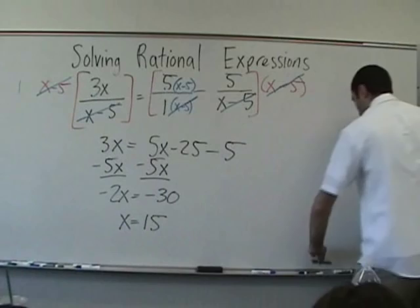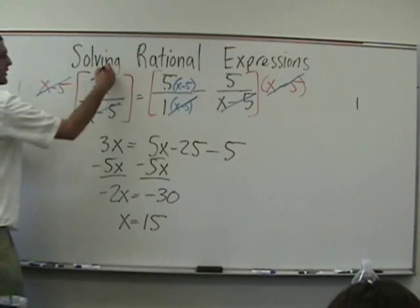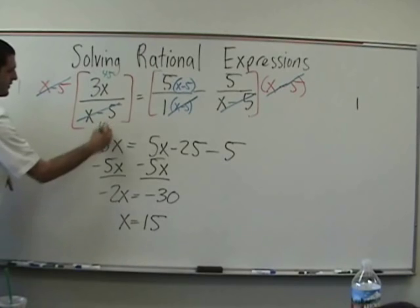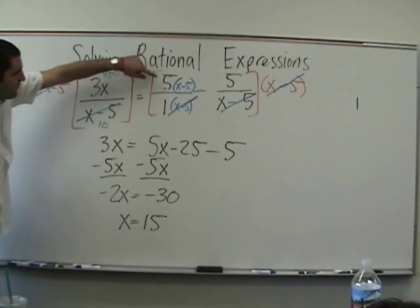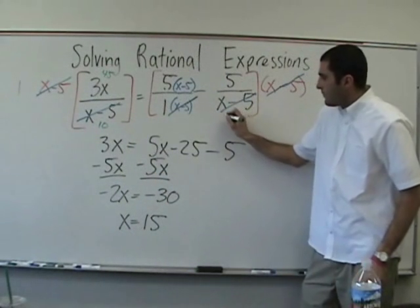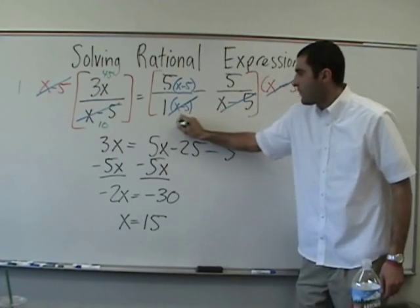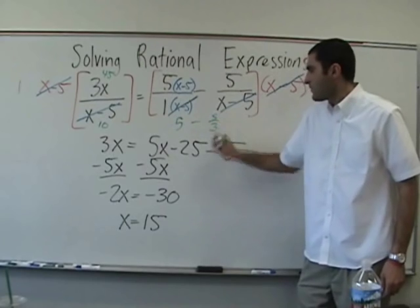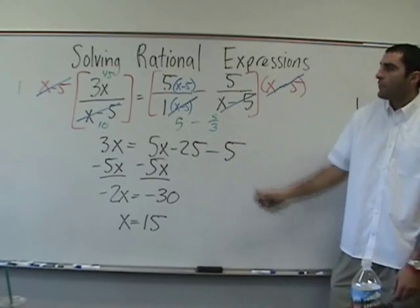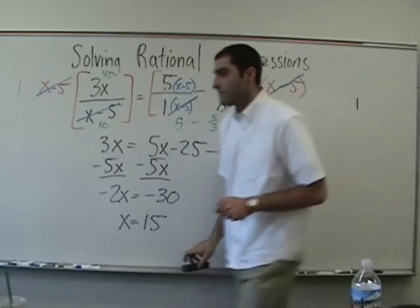Negative 30 by both sides by negative two. X equals 15. We can check our work. I dropped the marker. I picked it up. If x is 15, this will become 45 over 10. That's 45 over 10. That would be 5 minus 5 over 3. That's going to work. If we reduce the fraction, it'll work. Very good. Ready for the next?